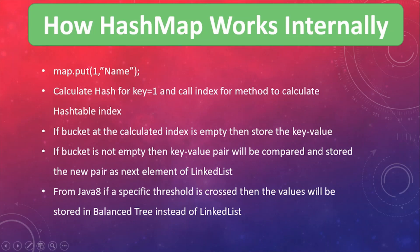Similarly, if we try to get any value, similar to the put method, we pass the key and in the same fashion the hash will be checked for that key. Then indexFor method will be called to calculate the hash table index, and in that index the value of the key will be compared. If a match is found for that key at that index, the value corresponding to that key will be returned — that is how map.get works.